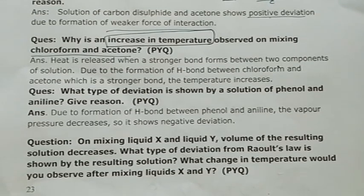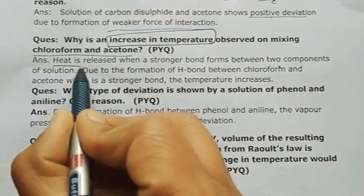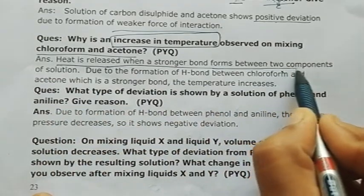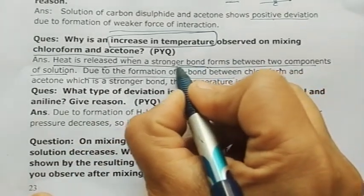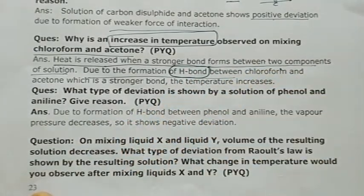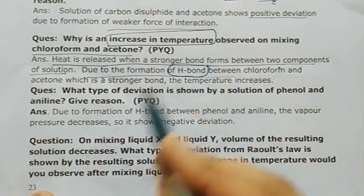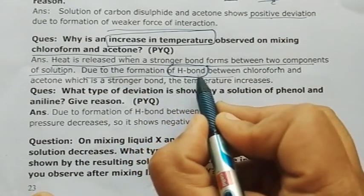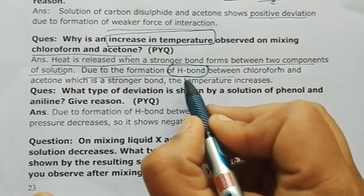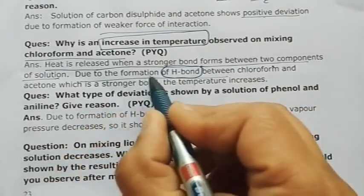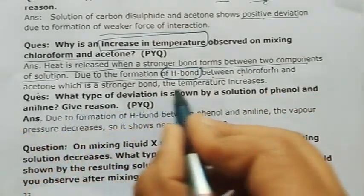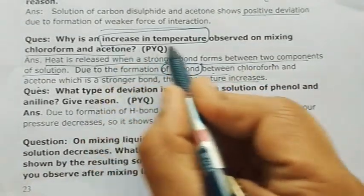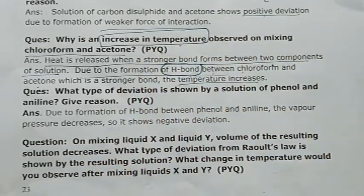If temperature increases (exothermic), it means a strong bond is forming. And if bond is strong, the deviation will be negative. So the answer is: heat is released when a stronger bond forms between the two components of the solution — due to formation of H-bond (or strong bond) between chloroform and acetone, it shows negative deviation.